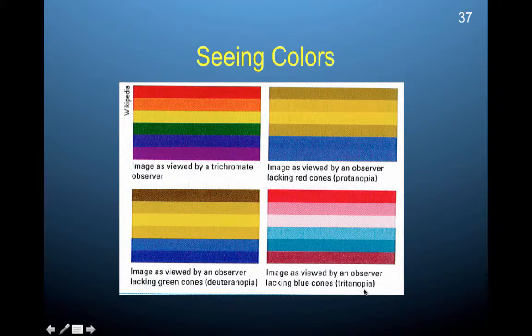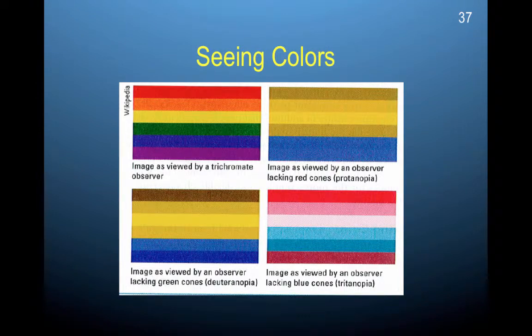Here's an image as viewed by an observer that lacks the blue cones — tritanopia. Interestingly, it looks like they can still perceive blue, but it would be done in a different way. This is important because these distinctions illustrate how we actually perceive colors does not correspond directly to the activation of particular cones in terms of pigment. Color has a perceptual component to it.